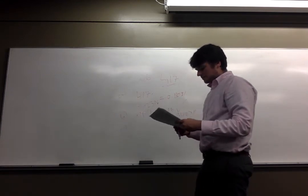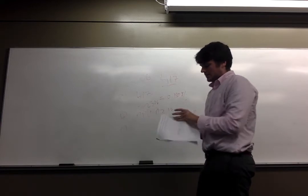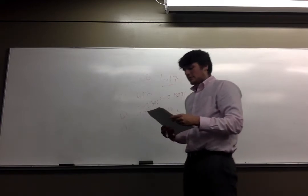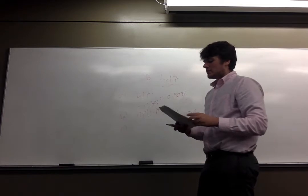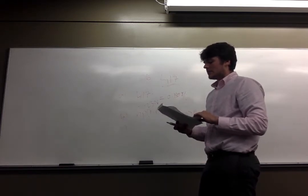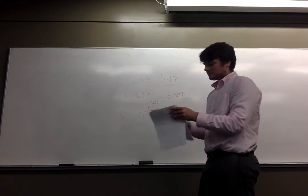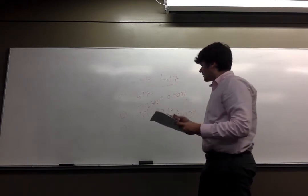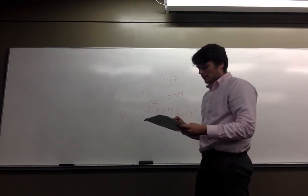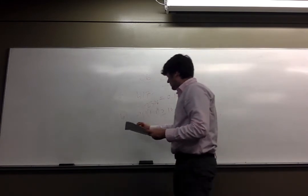And then for C, C says construct a 90% confidence interval for the population proportion of adult Americans who have donated blood. So obviously, first we need to find the lower bound and the upper bound.